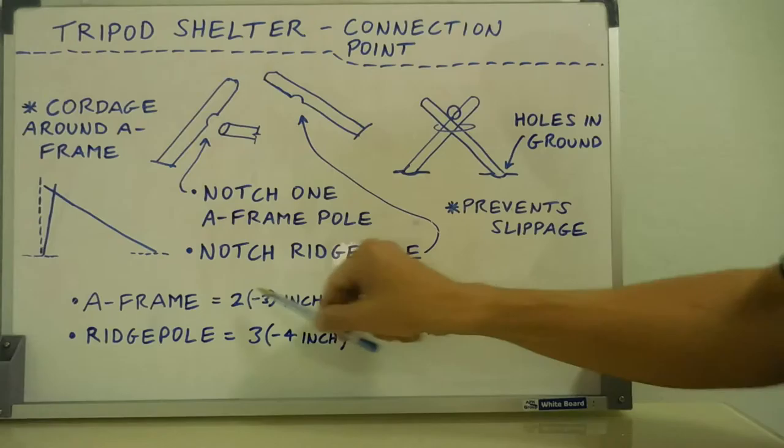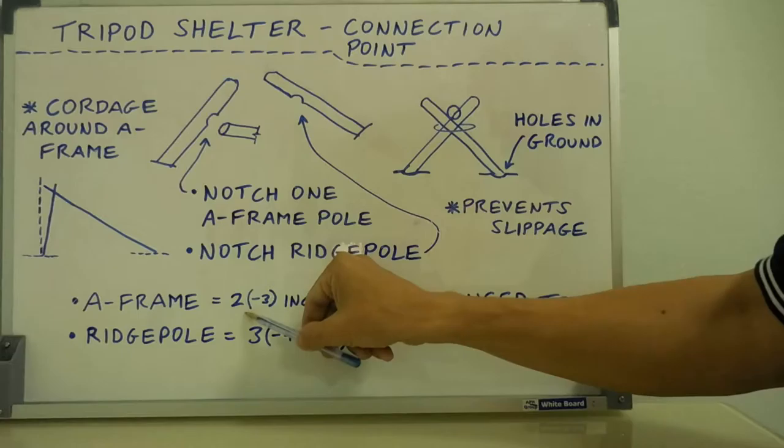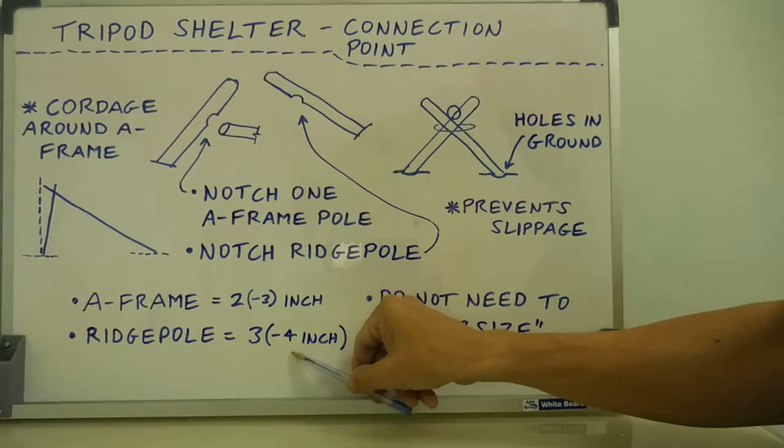And then the size, as I talked about, the A-frame poles to be 2 to 3 inches. Around 2 inches is fine. Could be a bit less, 1.5, could be a bit more than 2 inches. But 3 inch max, around 2 inches.